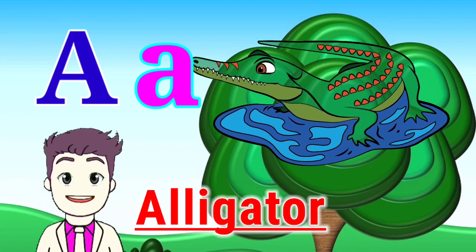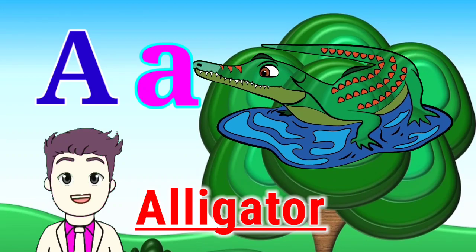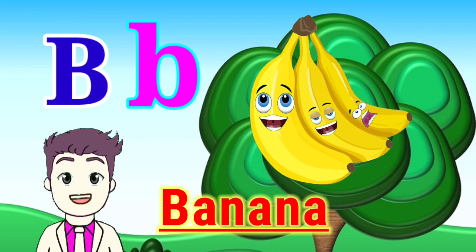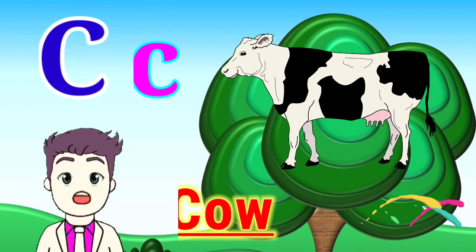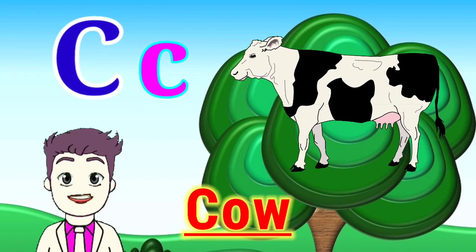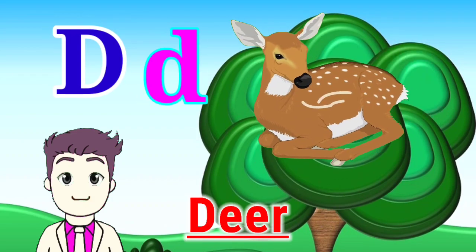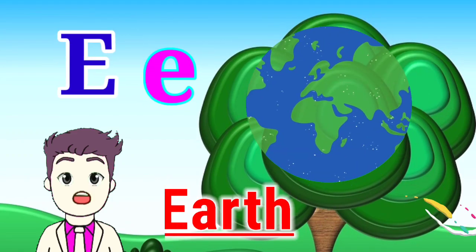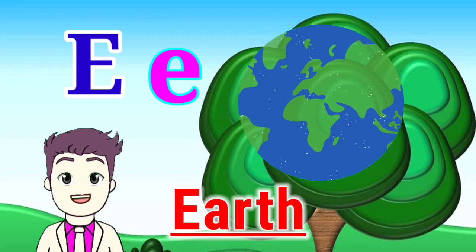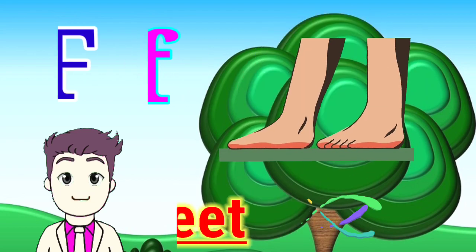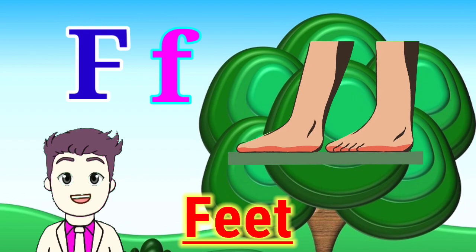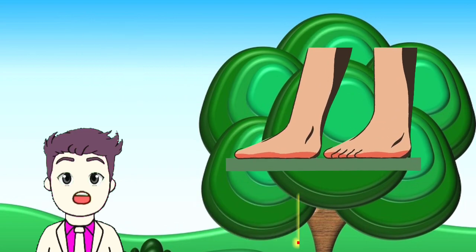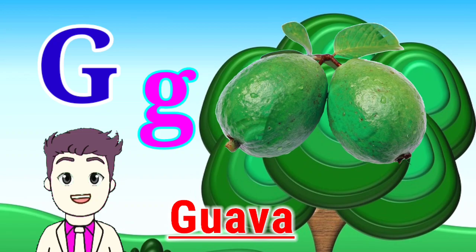A for alligator. B for banana. C for cow. D for deer. E for earth. F for feet. G for guava.